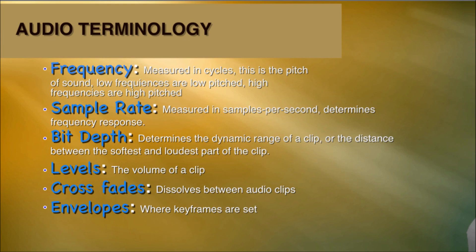Bit depth determines the dynamic range of a clip — the distance between the softest and the loudest part of a clip. Levels are the volume of a clip. Cross fades are dissolves between audio clips, where the end of one fades out and the beginning of another fades in. And envelopes are where you set your key frames — that's what envelopes are, they are where your key frames are set.